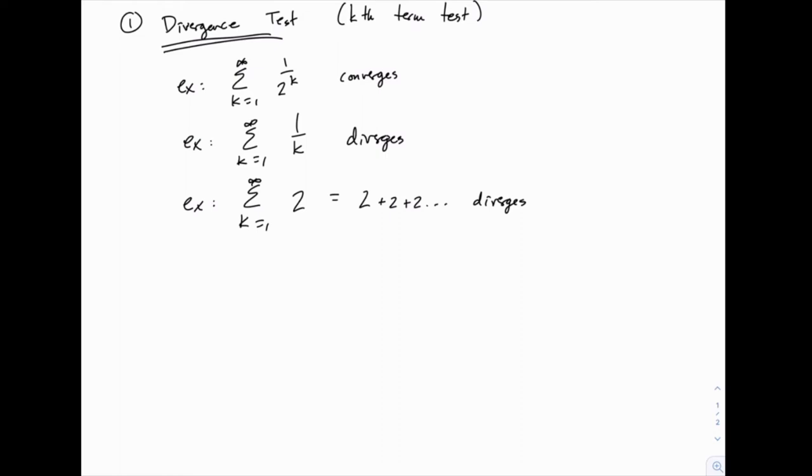So informally, the divergence test basically says, before we do anything else, we know that the terms have to be getting smaller in order to have any hope of converging.